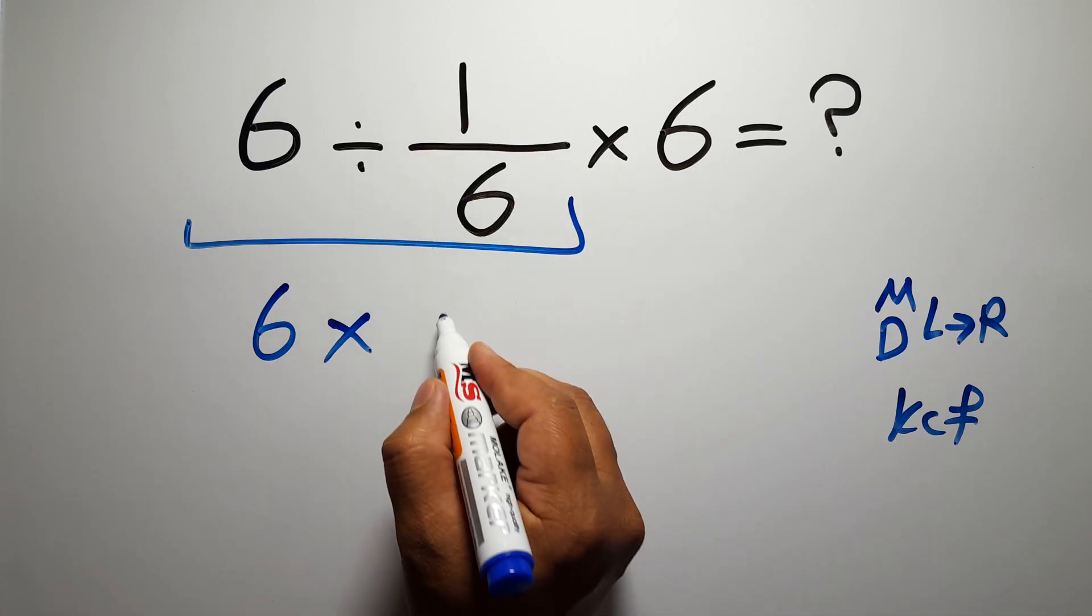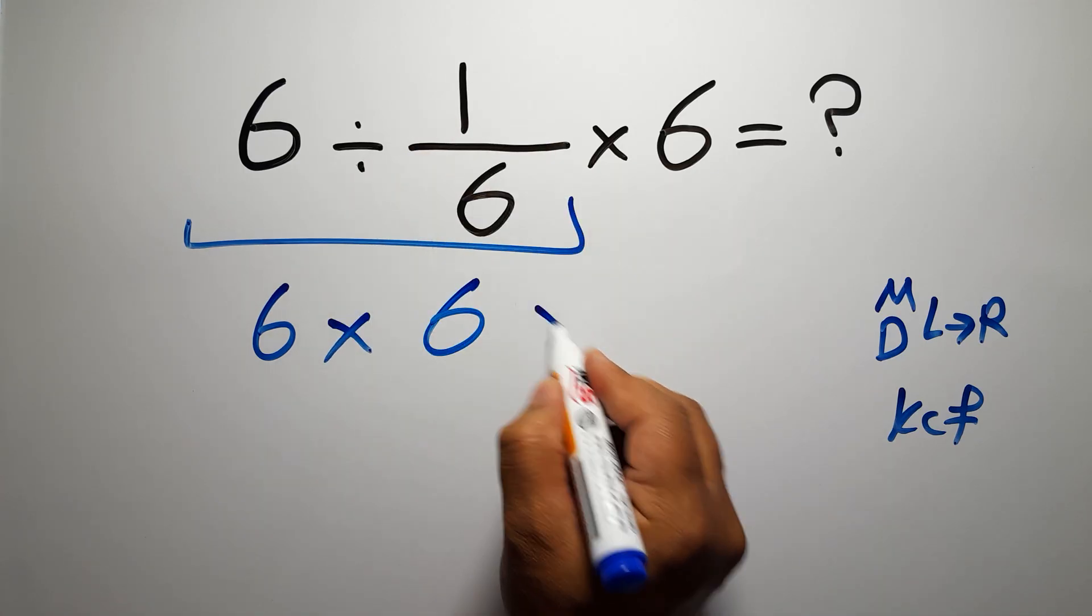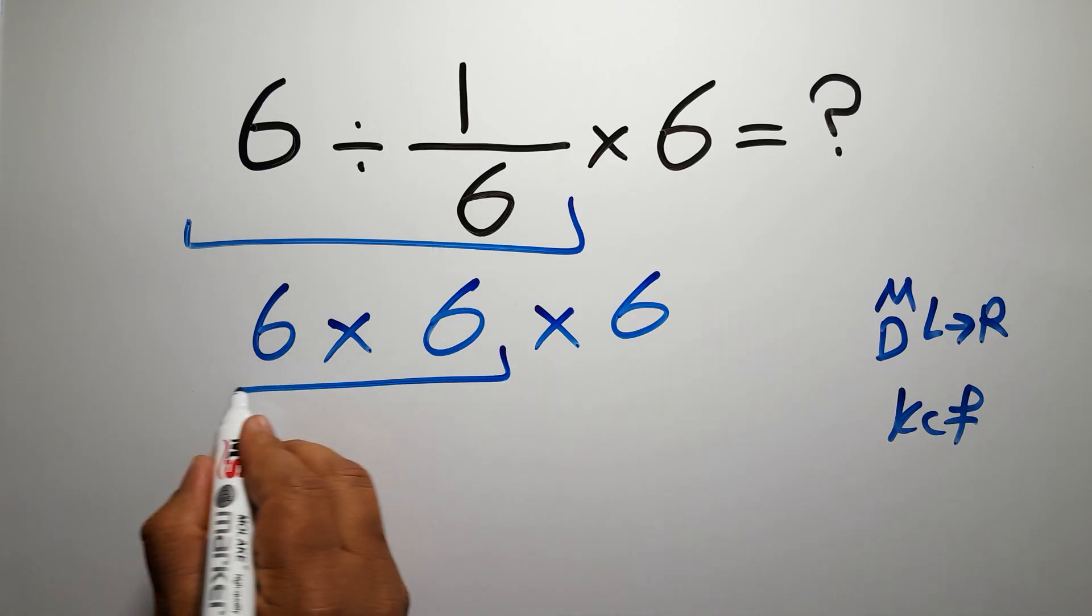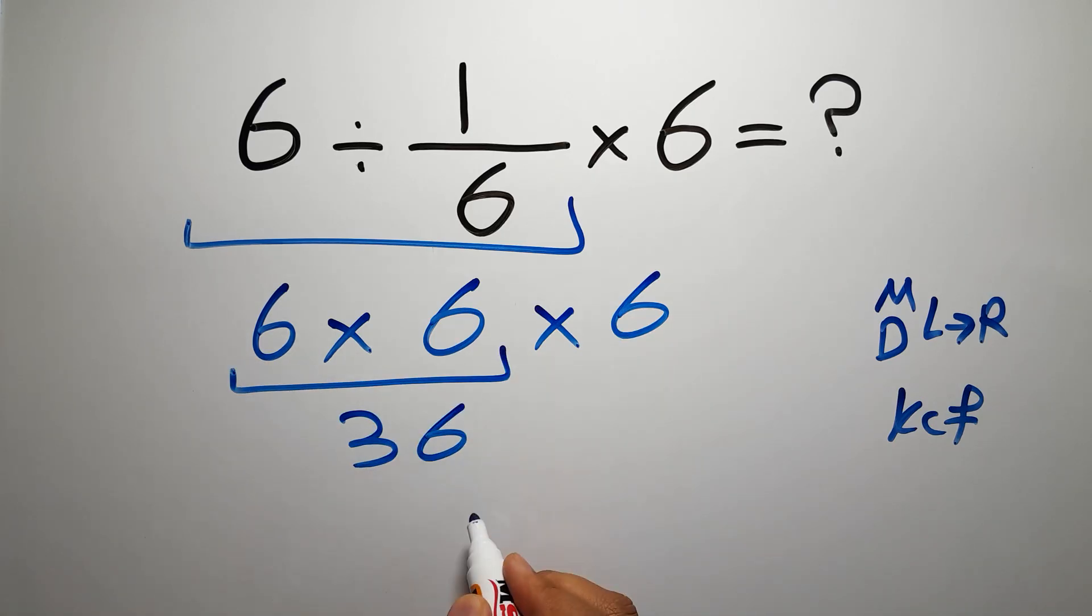And flip the second fraction, and here we have times 6. 6 times 6 gives us 36, so 36 times 6.